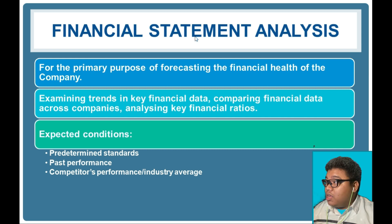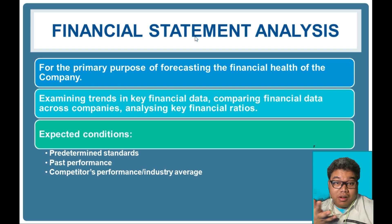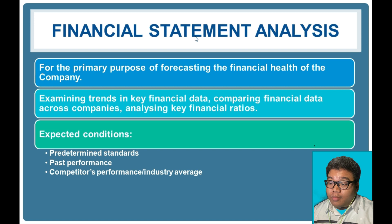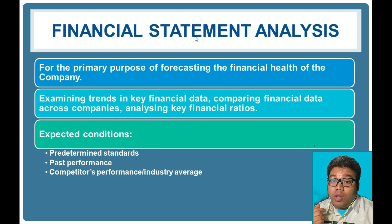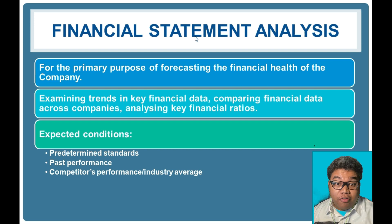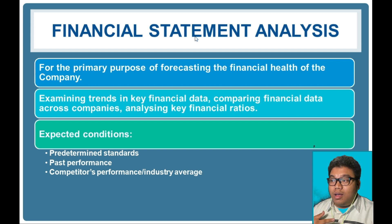When we use predetermined standards as a basis, we do variance analysis or standard costing. If we consider past performance, we are determining trends through historical analysis. And when we consider competitors' performance or the industry average, we are actually doing a form of benchmarking.